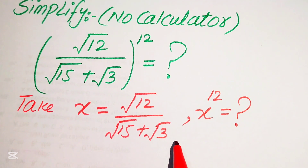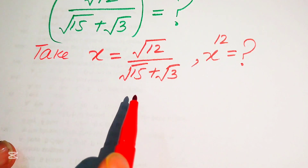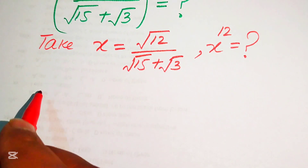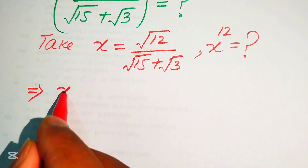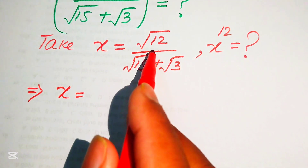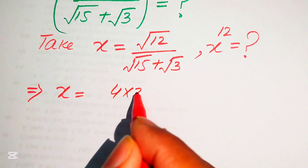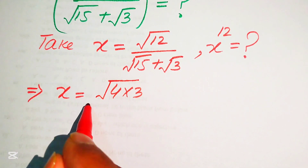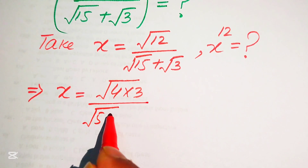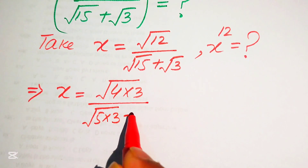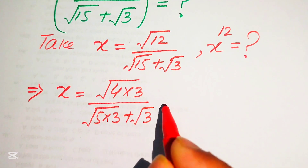In order to find x to the power of 12, we first simplify x. We rewrite 12 as 4 times 3, and we rewrite 15 as 5 times 3 — so the denominator becomes √(5×3) plus √3.